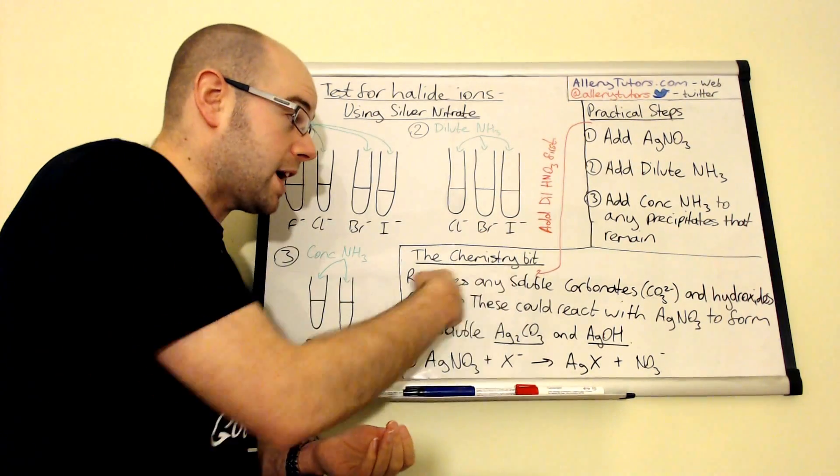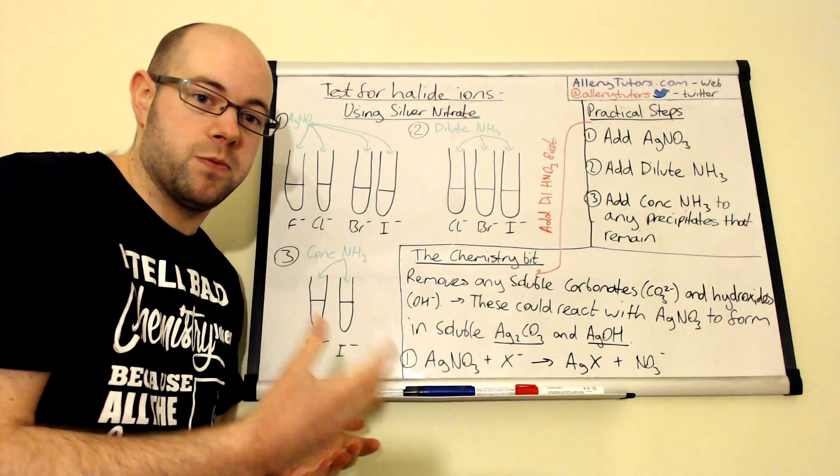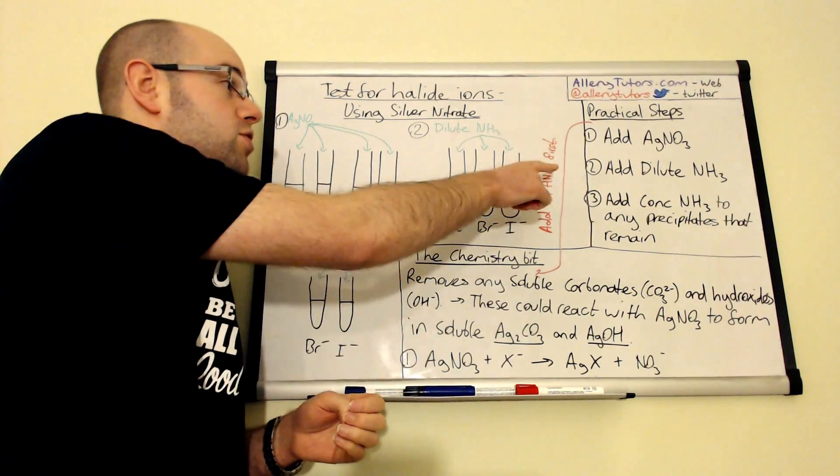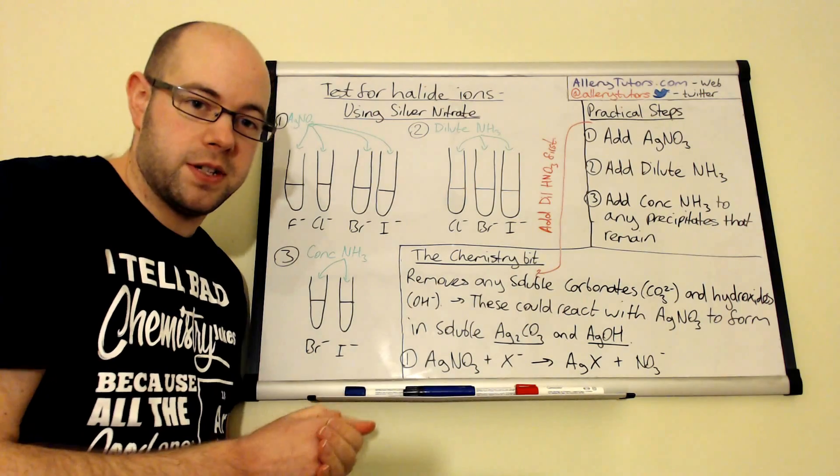A way in which we can get rid of these carbonate and hydroxide impurities is by adding nitric acid first. The nitric acid will react with these two ions and remove them from the overall reaction.